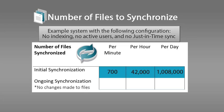For each ongoing synchronization, when no changes were made to files, Filer synchronized 2,300 files per minute, 138,000 files per hour, and 3,312,000 files per day. You should take these numbers into consideration as you configure the sync schedules for the Netfolders on your Filer system.